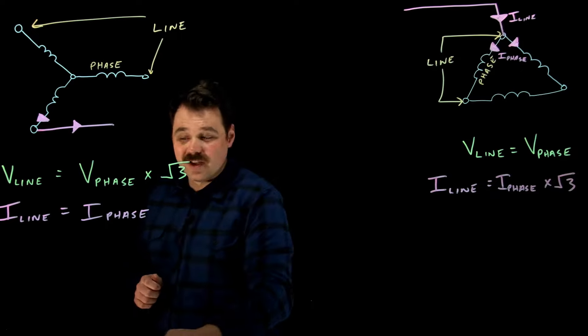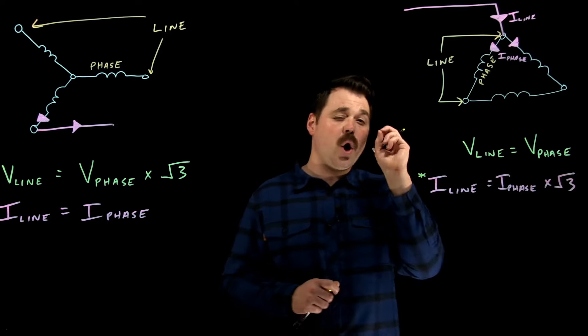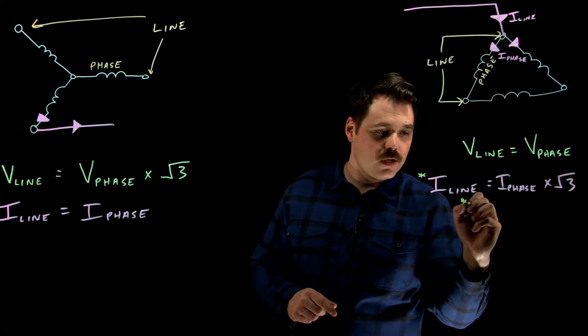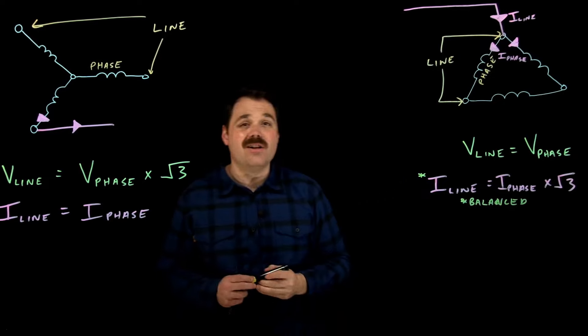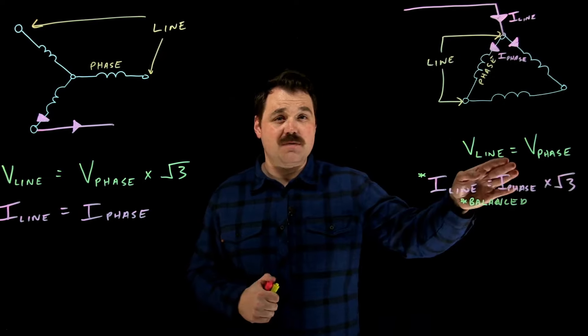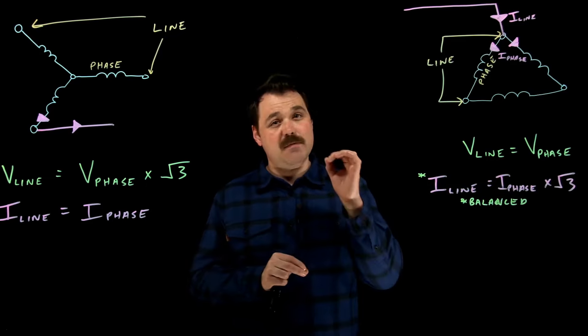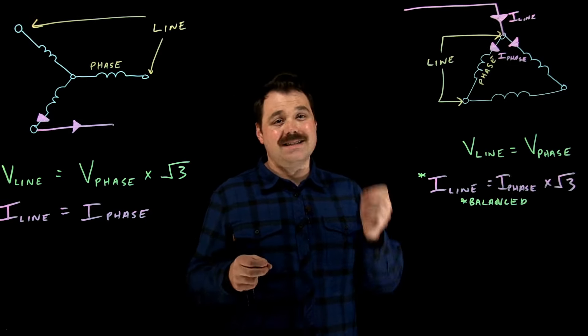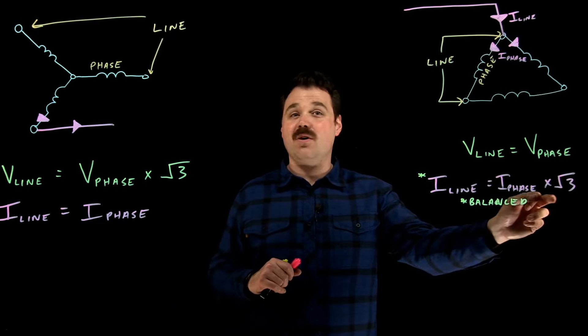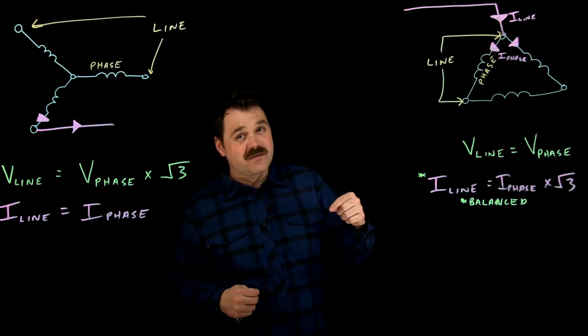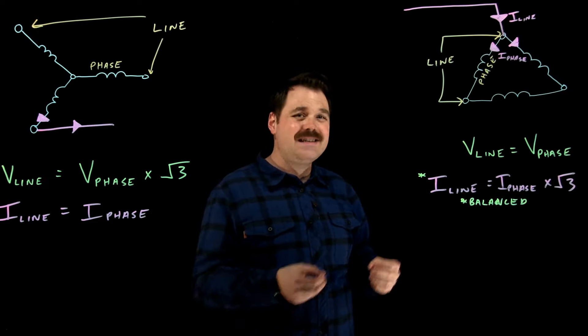And I just want to point out one thing here, that this relationship there, I line equals I phase times root three is only true in a balanced load or in a balanced delta circuit. The voltage relationship is true in balanced or unbalanced. Of course, a balanced circuit, meaning that each phase has the same impedance and the same power factor. That's what makes it balanced. Same impedance and same power factor in each phase. So if they are balanced, my line current will be my phase current times root three. If they are unbalanced, you can check out the video I have linked below or up top here, which will show you those relationships for unbalanced current in a delta circuit.